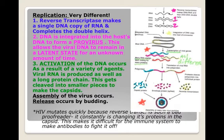Once activation occurs, the viral DNA becomes active and recreates RNA. It makes one huge long protein chain called a polyprotein, and that polyprotein gets cleaved into smaller pieces. Part of that protein makes the capsid proteins, part makes the envelope proteins or spikes, and part makes the reverse transcriptase. Then assembly can occur.